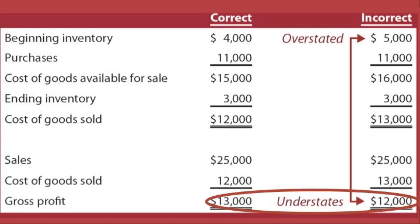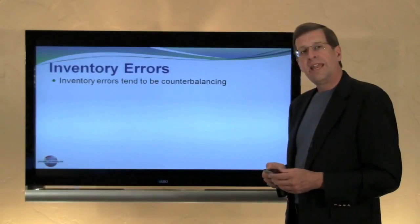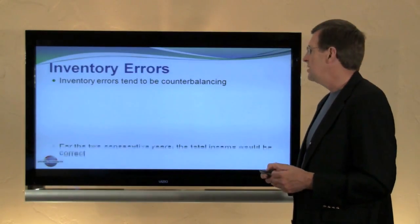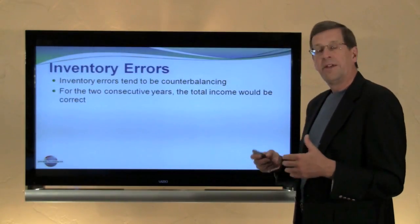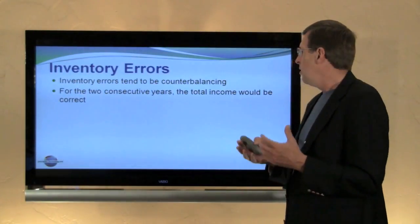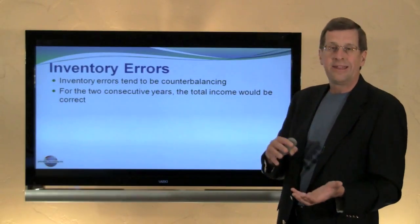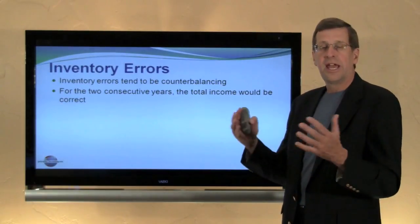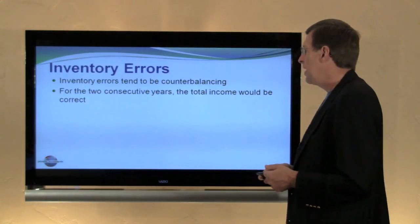So overstating beginning inventory caused an understatement of gross profit. Purchases were correctly measured — we're only talking about an error in physically counting or determining what is on stock in these cases. Notice that inventory errors tend to be counterbalancing: for the two consecutive year period, while one year's profit was overstated and the next year was understated, it counterbalanced out to the correct amount.